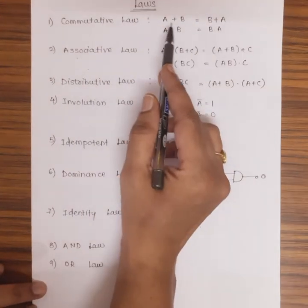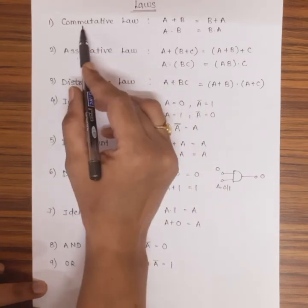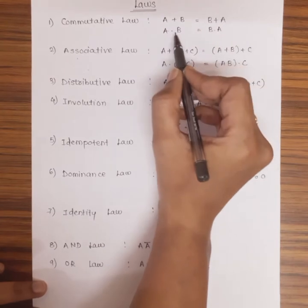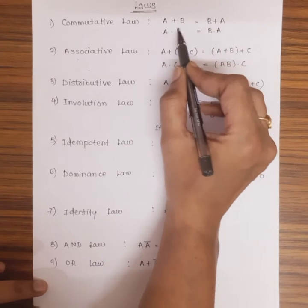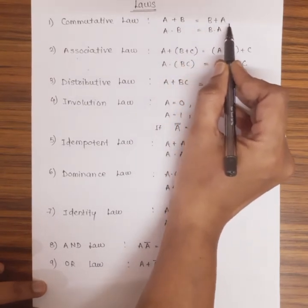Let us see certain laws which are used in performing logical OR and AND operations. Starting with commutative law: first is A + B = B + A, similarly A · B = B · A, which shows that even though the order of operands is changed, the final result remains unaffected.